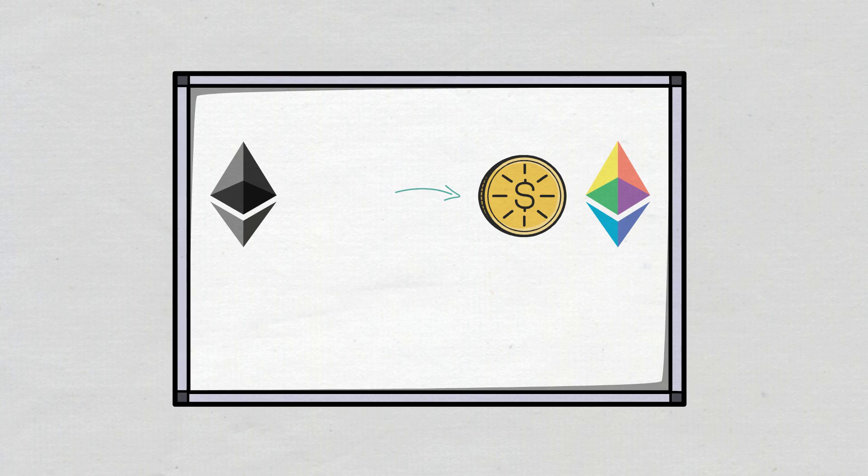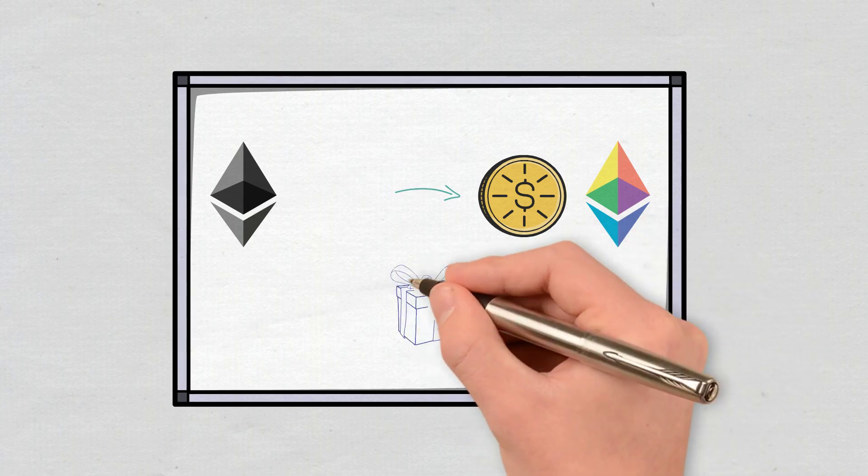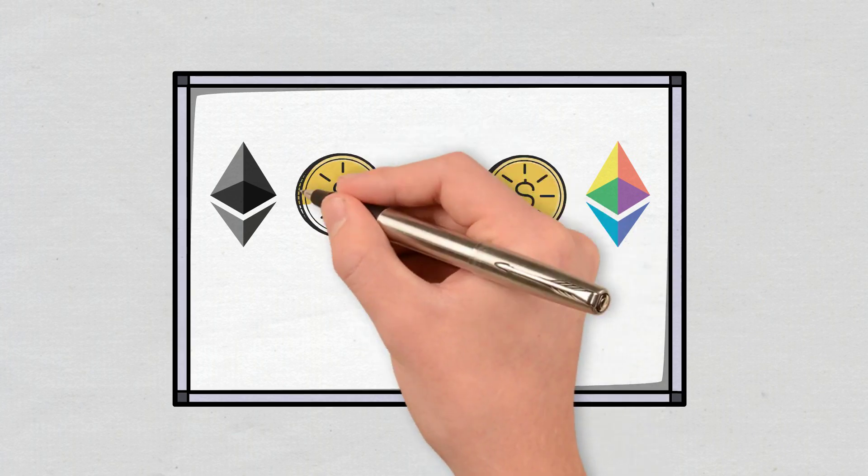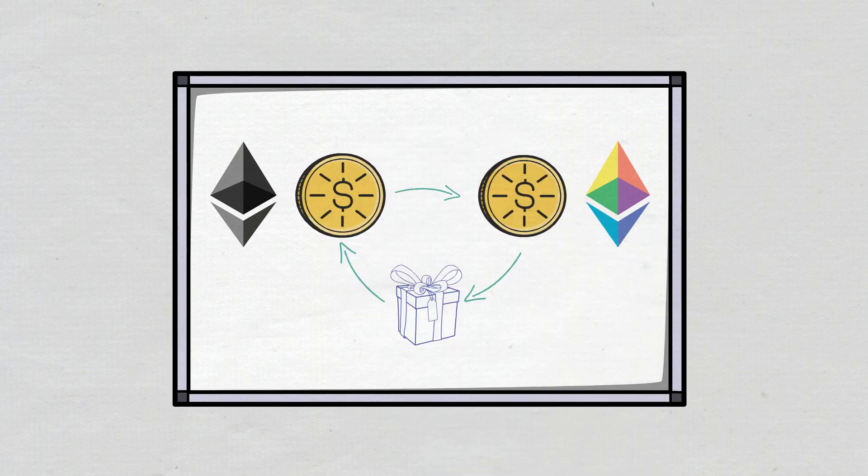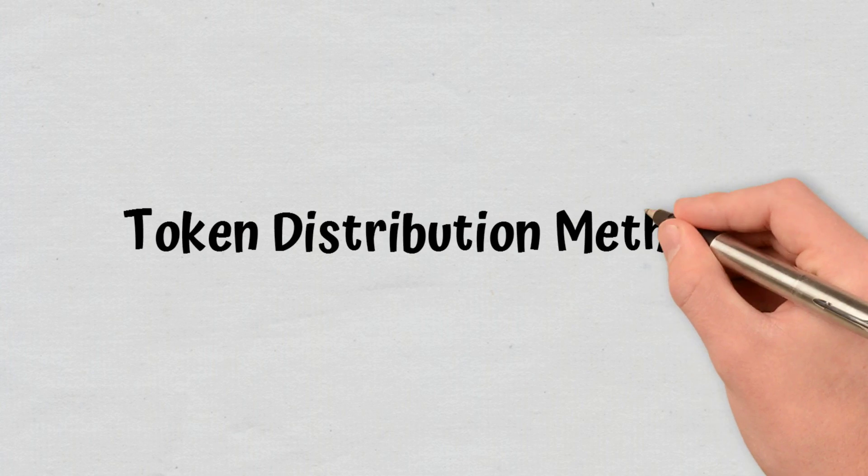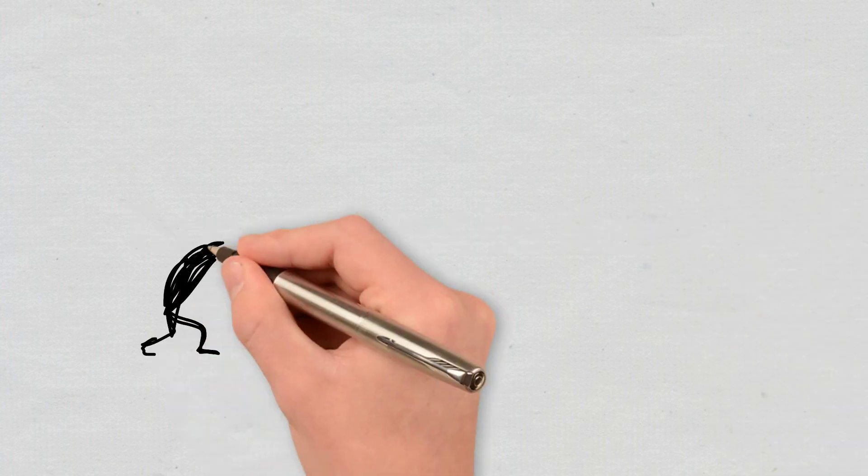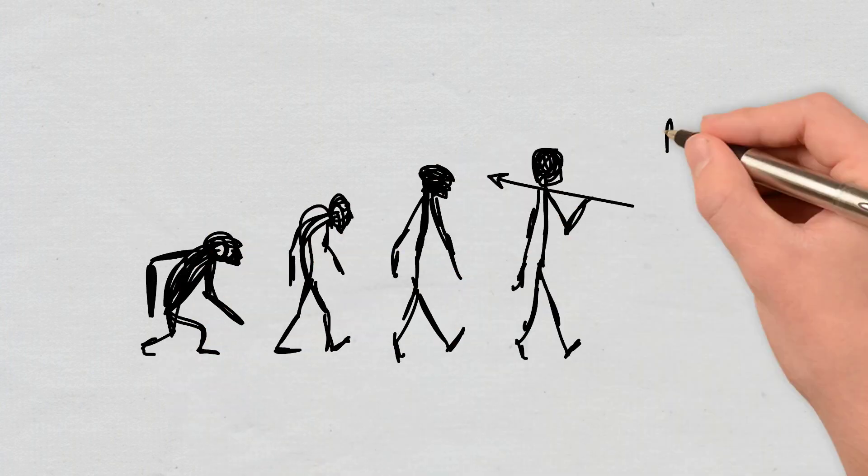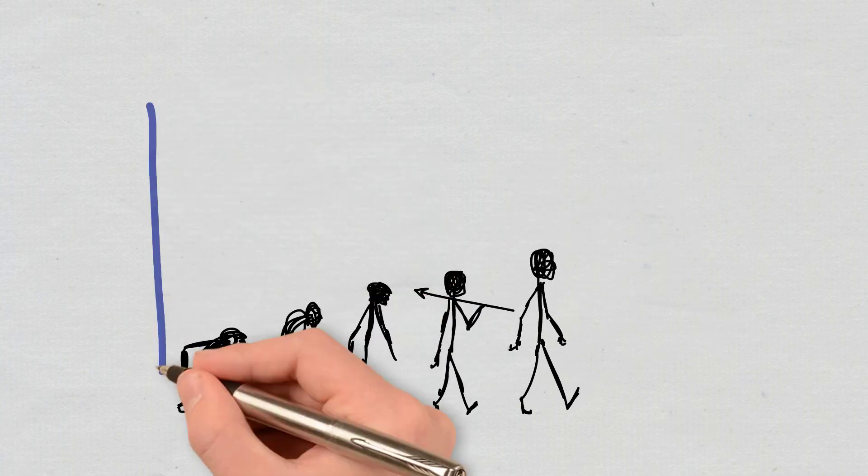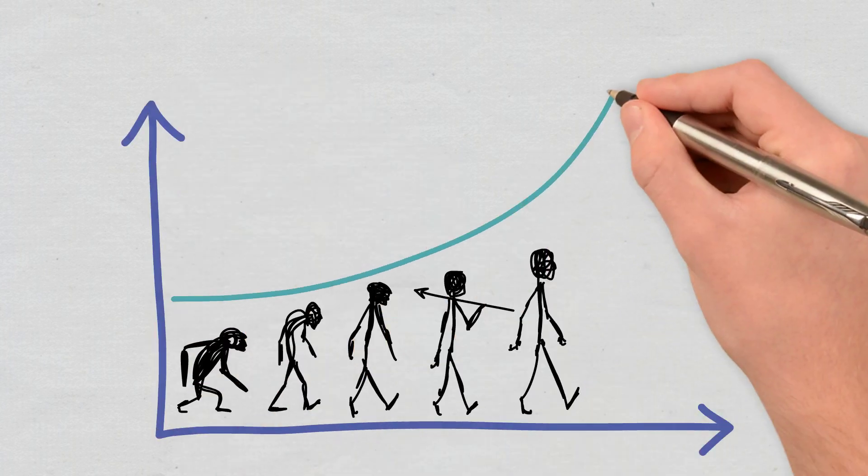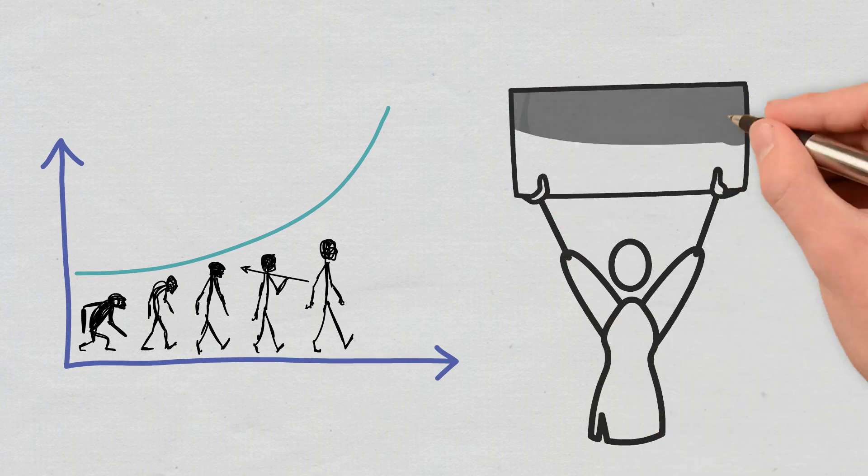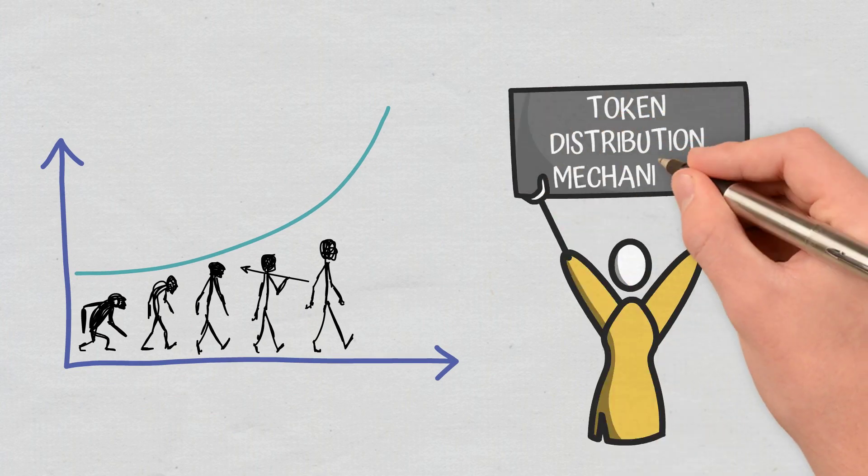Token distribution methods. Tokens have been distributed in different ways throughout time, with this area evolving continuously. Some of the most important token distribution mechanisms include the following.